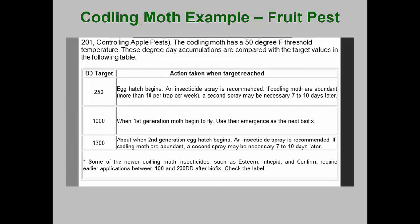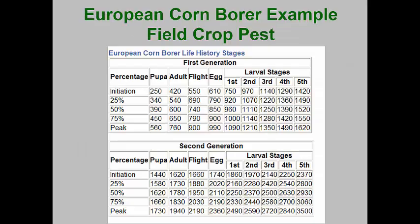Here's what a degree day chart may look like. This is a simple one taken from a fruit tree spray program. It indicates that the first eggs hatch at 200 degree day units and the second generation of eggs hatch at 1,300 degree day units. Thus, treatments should be made at those two times in order to keep codling moths under control. More complicated models can be constructed, as shown in this one for the European corn borer, which actually shows when the different instars should be present and in what proportion of the population.